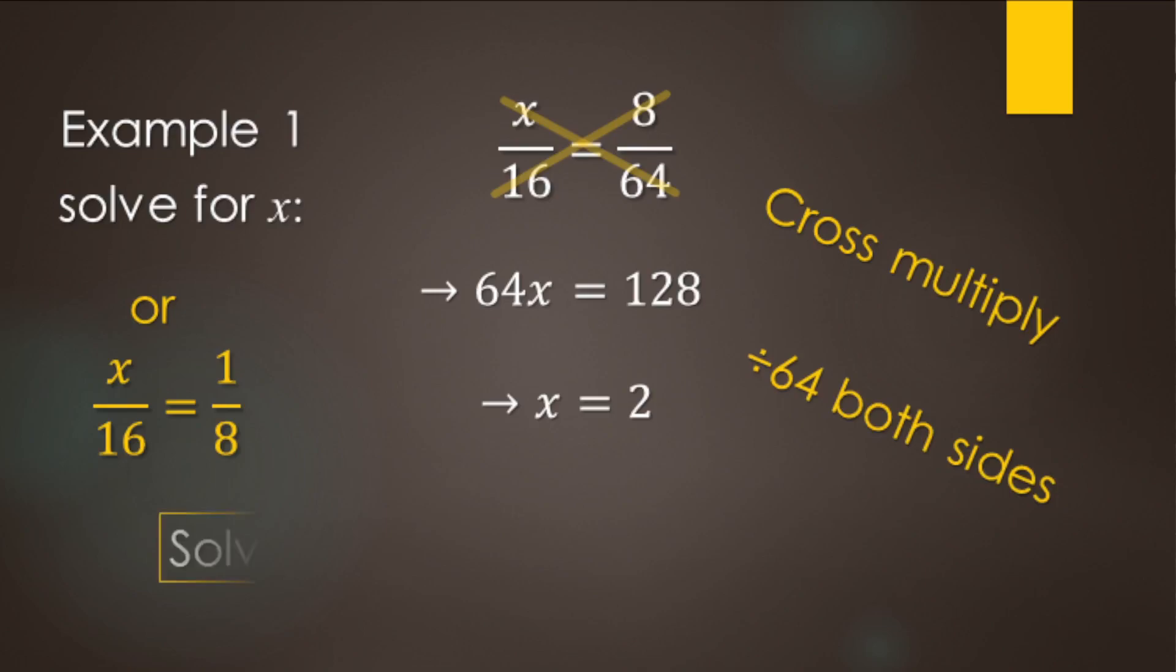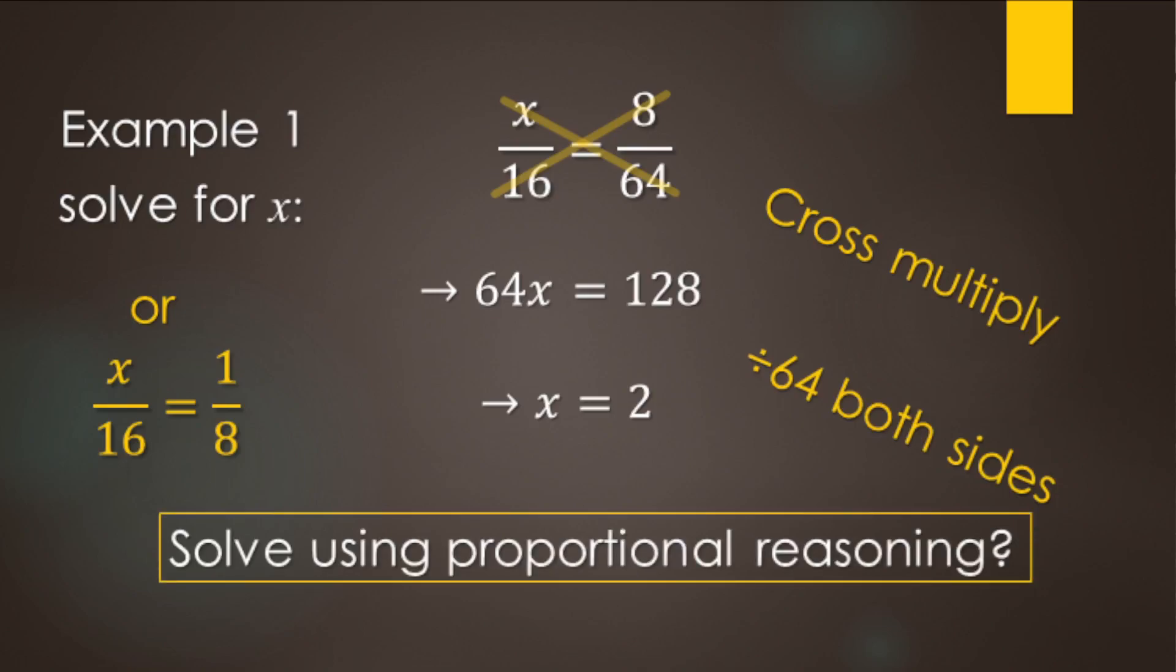The other thing that we can do with these two is use what's called proportional reasoning. So we're trying to find x here. So we want to figure out 8 times what makes x. Well, we look down here. 64 times what equals 16? Well, it's actually a divide by 4 or a multiply by 1 fourth. So we can do that here. 64 divided by 4 is 16. So 8 divided by 4 makes 2. Even easier when it's already reduced. So in this case here, we have 8 times what makes 16? 8 times 2. So we do 1 times 2 to make x there. So that's using proportional reasoning.